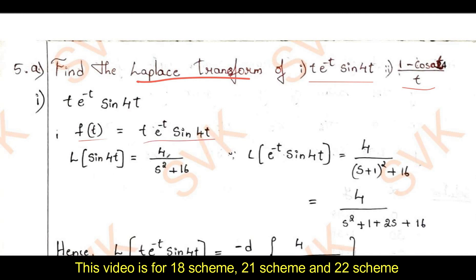First find the Laplace of sin(4t), which is 4/(s² + 16). Then apply the shifting property: Laplace of e^(at)·f(t) equals F(s − a), which means we change s to s − a. Here the value of a is −1, so we change s to s + 1.